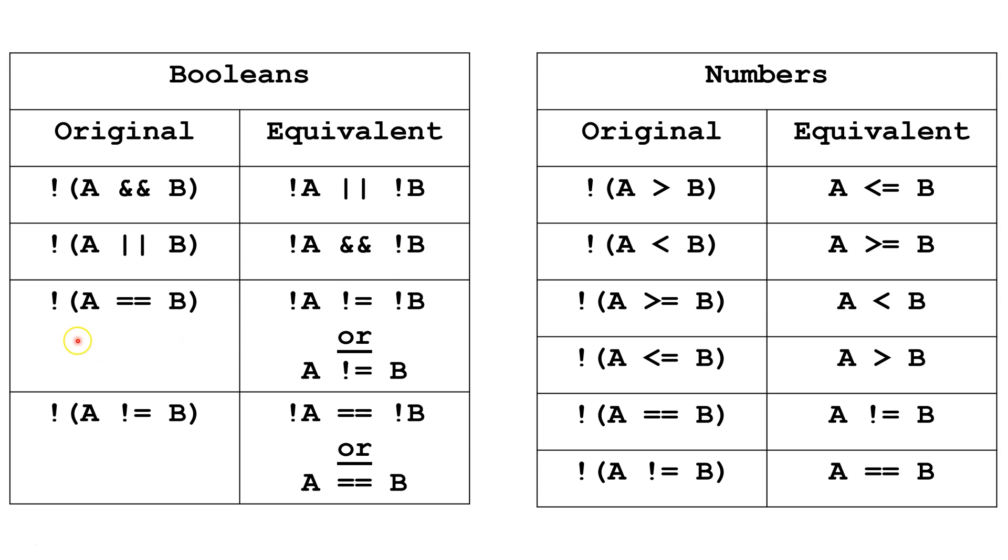Here's an example. Not A equals B. We can reverse A to Not A, equals to Not equals, and B to Not B. Now, traditionally, when we want to simplify Not A equals B, we do it like this, which is all equivalent.